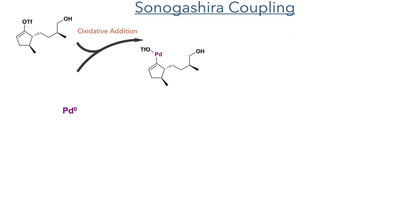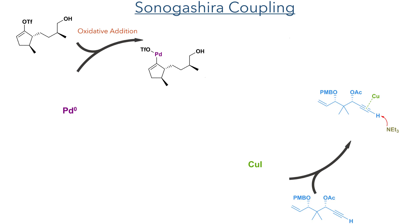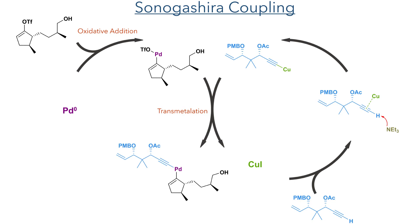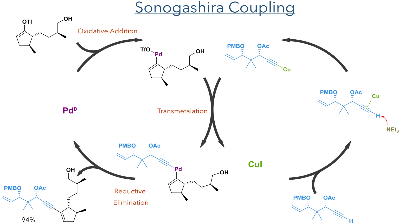This triflate was required for the Sonogashira coupling. Palladium first undergoes oxidative addition into the carbon-oxygen bond, forming an organopalladium species. In tandem with this palladium cycle there is also a copper cycle, where copper iodide reacts with fragment one, first coordinating to the alkyne allowing it to be deprotonated by triethylamine, forming an alkynyl copper species. A transmetalation then occurs and produces a compound where both fragments are coordinated to palladium. Reductive elimination produced the target compound in a 94% yield and regenerated palladium(0).